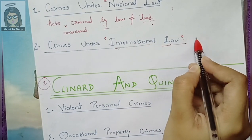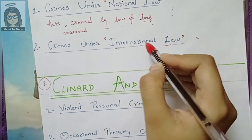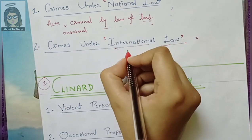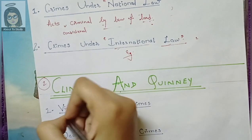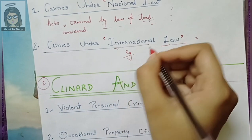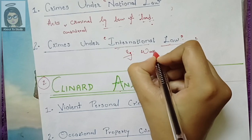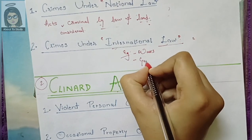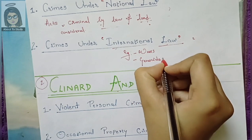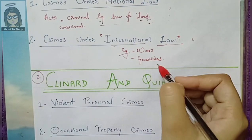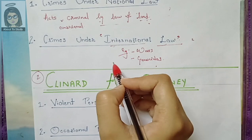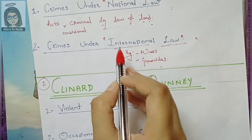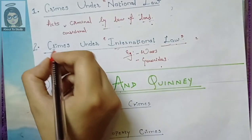If it is a crime under international law, then the international boundary has been crossed. It is concerned with the external foreign affairs of the state — like wars, genocides, and mass killing. These are all examples of international law, which are concerned with the external foreign affairs of the state.